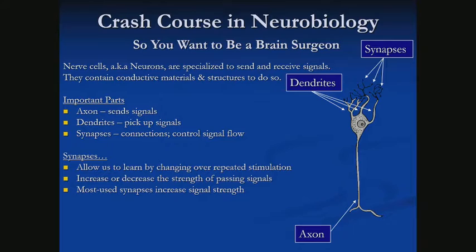That flow will increase or decrease. The most often used synapses and dendrites — where signal is going across them the most often — those synapses will be reinforced. They'll let more energy, more signal flow across them.